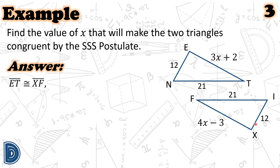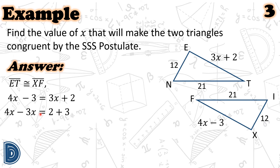By the definition of congruent segments, these two segments have the same measure. For our equation, we have 4X minus 3 equal to 3X plus 2. Solving for X, we subtract 3X from both sides of the equation and add 3 to both sides. We get 4X minus 3X equals 2 plus 3, so X equals 5. Therefore, X must be equal to 5 so that the two triangles in the figure are congruent by the SSS postulate.